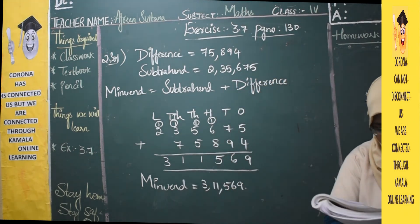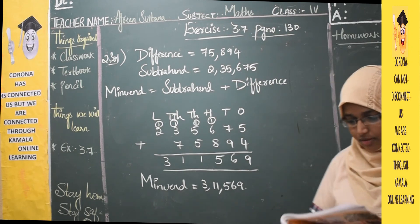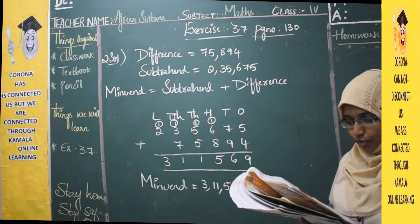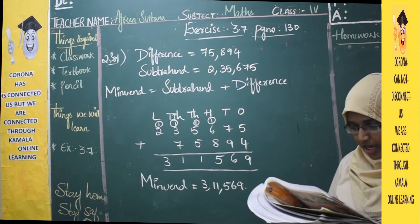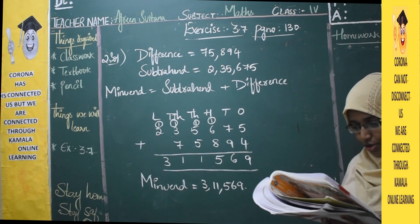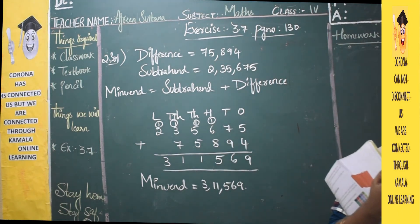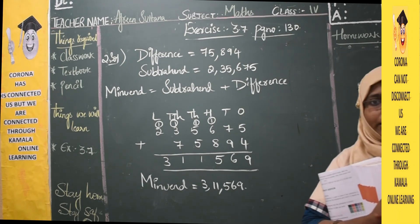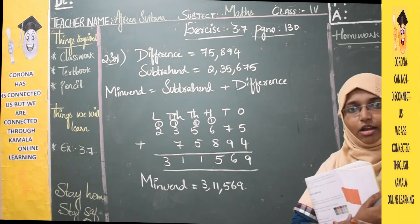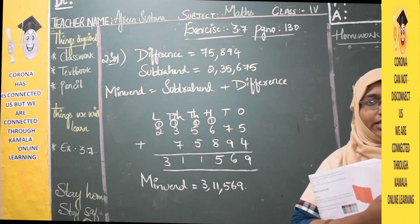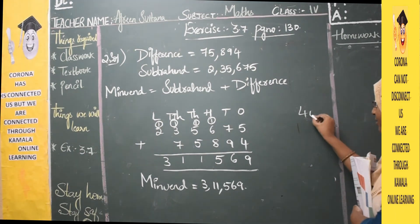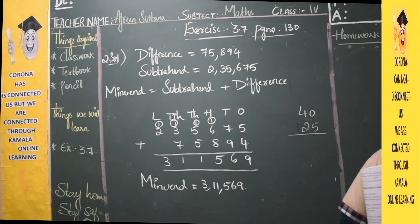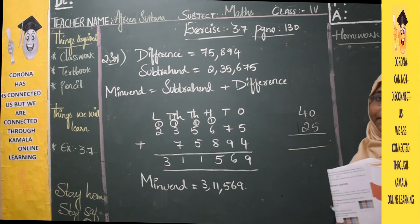Question 3: There were 2,455 seats in an indoor stadium. 1,975 people came to watch a cultural program. How many seats were empty? To understand this, take an example like your classroom — if there are 40 seats but only 25 students have occupied them, how many seats are left over? That means 40 minus 25 equals 15 seats are available.